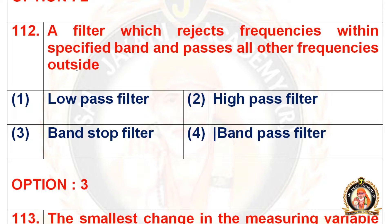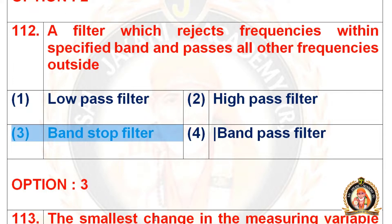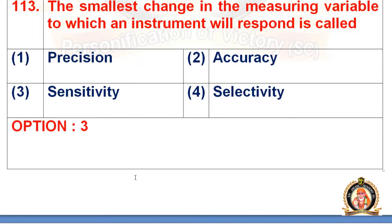Question 112: A filter which rejects frequencies within the specified band and passes all other frequencies outside. Options are low pass filter, high pass filter, band stop filter, and band pass filter. The right option is the third option, that is band stop filter.